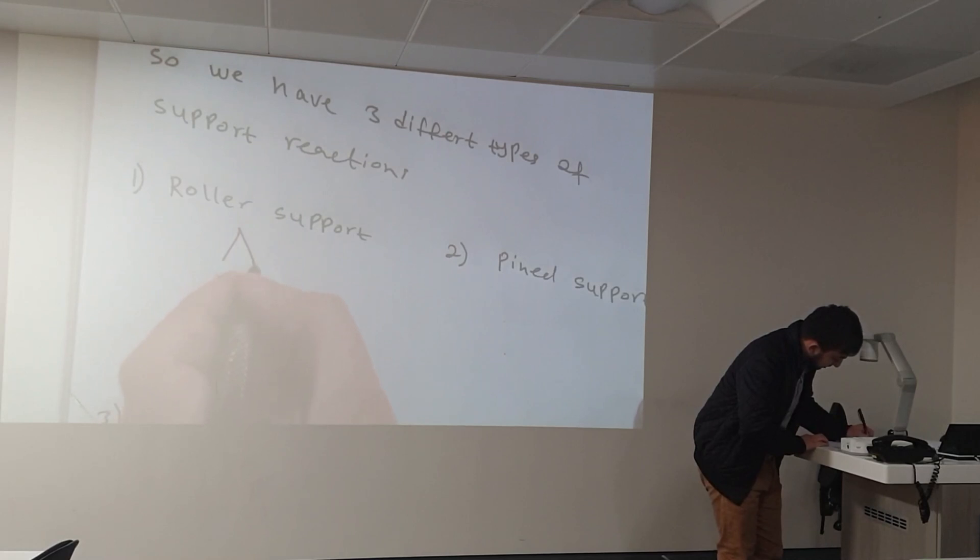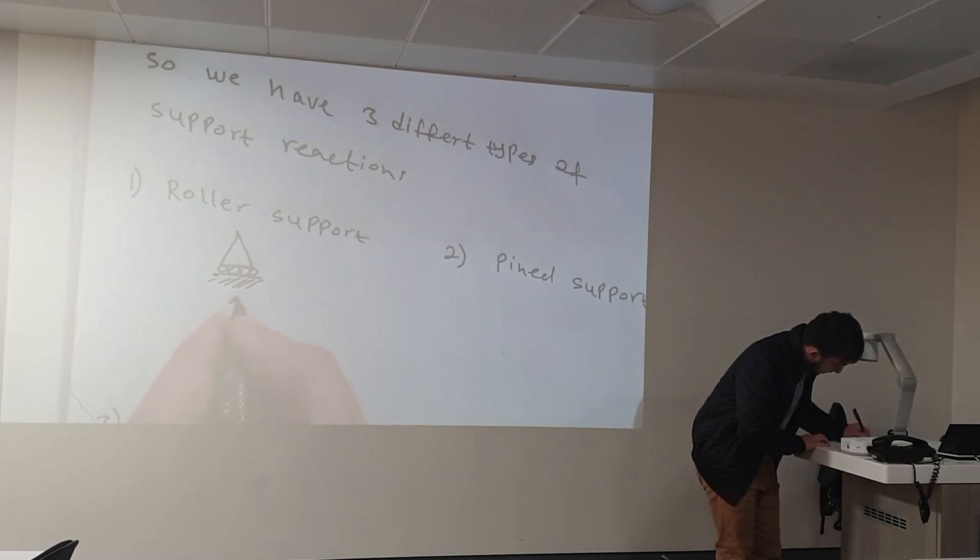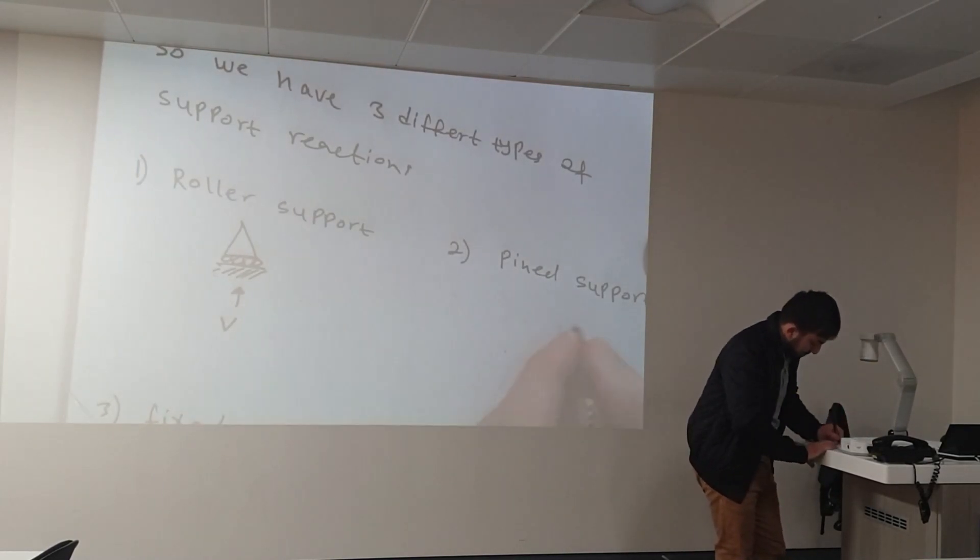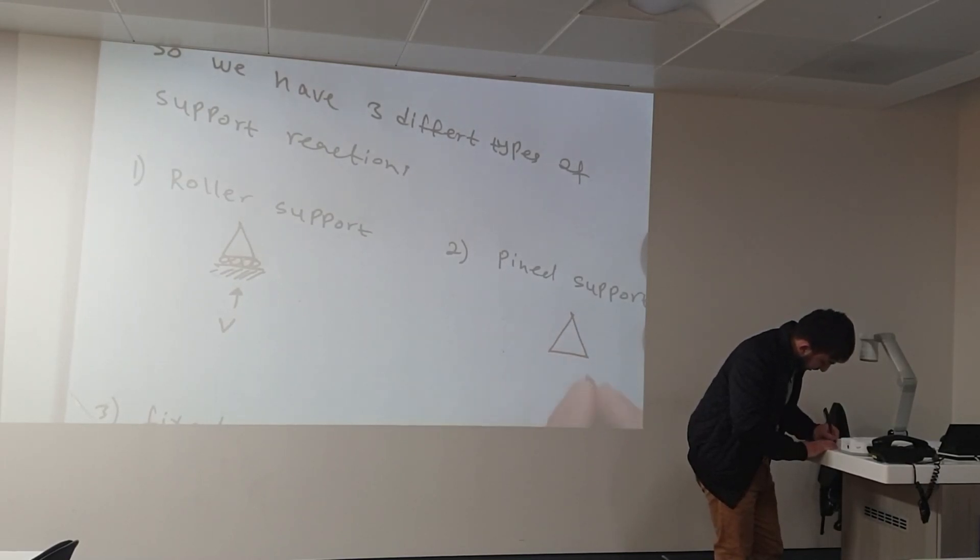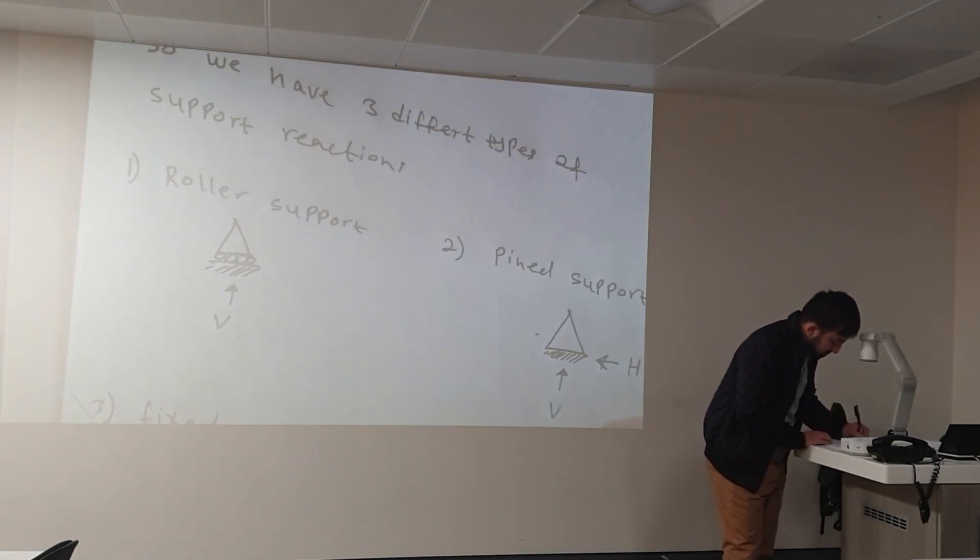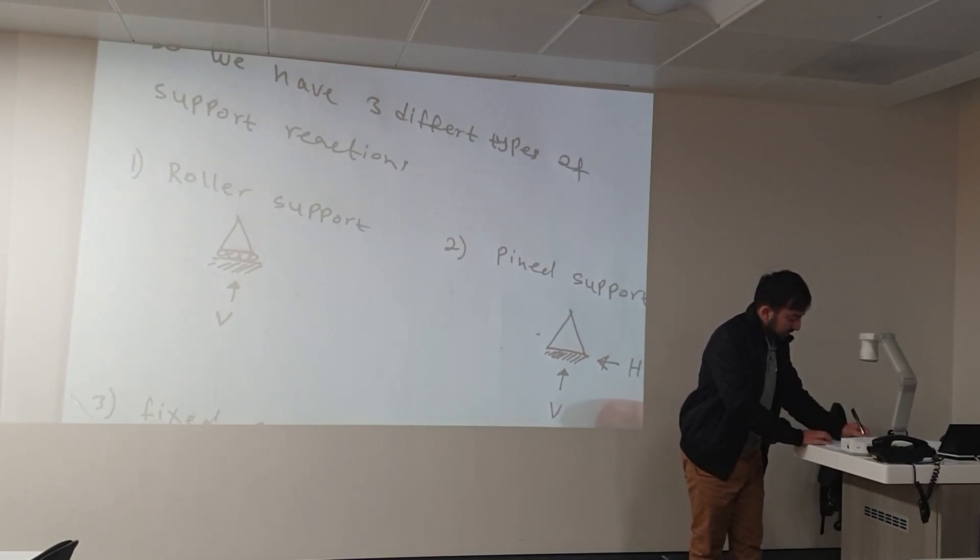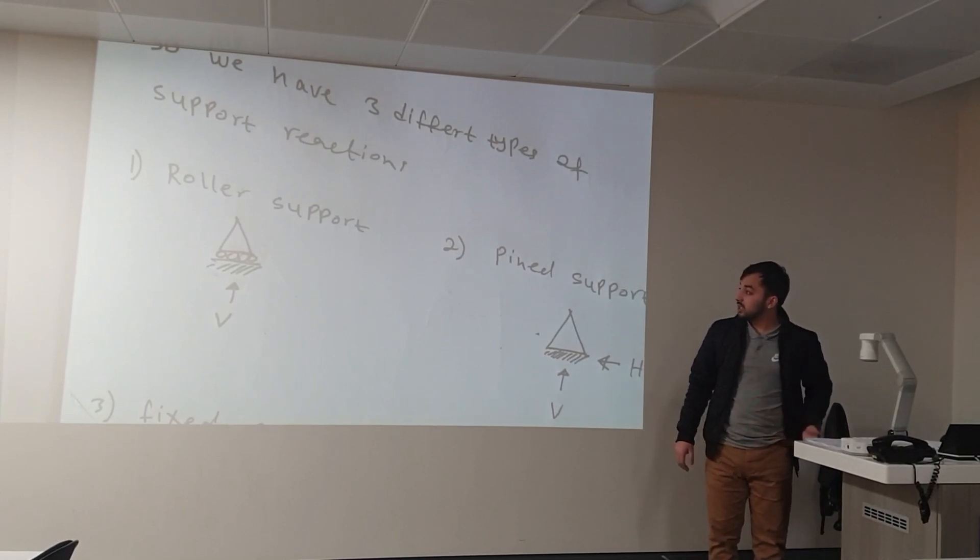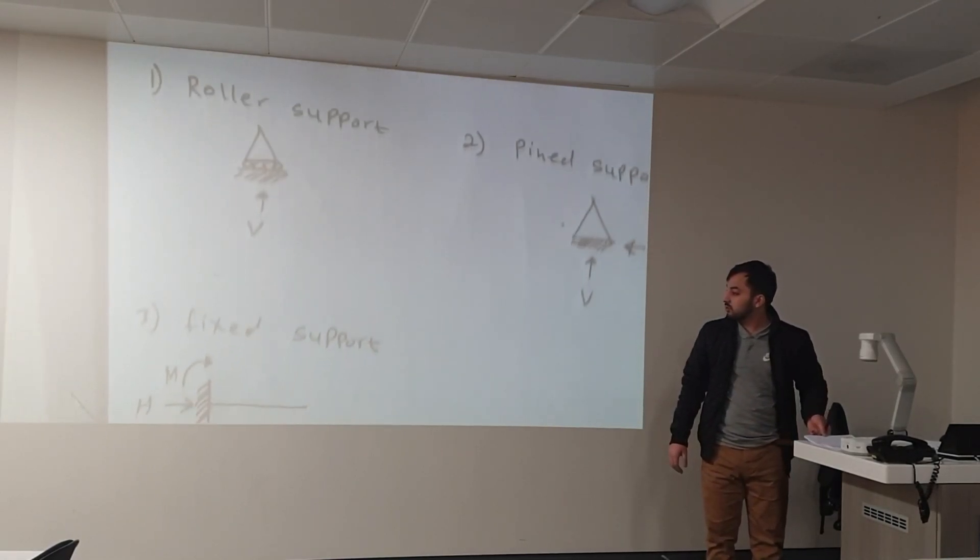Roller support has only one reaction which is acting vertically. Pin support has two reactions: horizontal reaction and vertical reaction. And the fixed support has three reactions: horizontal reaction, vertical reaction, and moment.